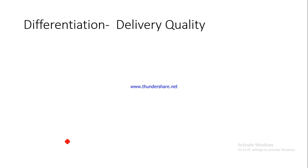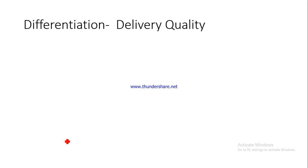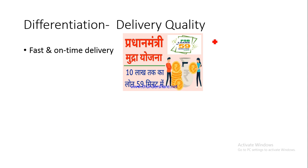Now let us talk about how you can differentiate through delivery quality. We can do something with respect to delivery quality which creates differentiation. Have a look at this: Pradhan Mantri MUDRA Yojana — public sector bank loans in 59 minutes. This website says they will provide MUDRA loans of up to 10 lakh in just 59 minutes. In a normal bank you may have to wait 2-3 days for document verification and formalities. Here, within 59 minutes — not even one full hour — you will be given the loan. One key way to create differentiation is by ensuring very fast and on-time delivery.